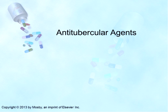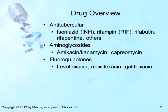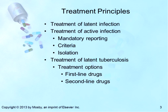We're going to finish this section talking about the anti-tubercular agents, the antifungal agents, as well as the antiviral agents. We're going to do a quick review of these medications because these are not as common in practice, other than the antifungals, unless you're specializing. We're going to start with the anti-tubercular agents, which include isoniazid, rifampin, aminoglycosides, and the fluoroquinolones. Let's talk about treatment principles.